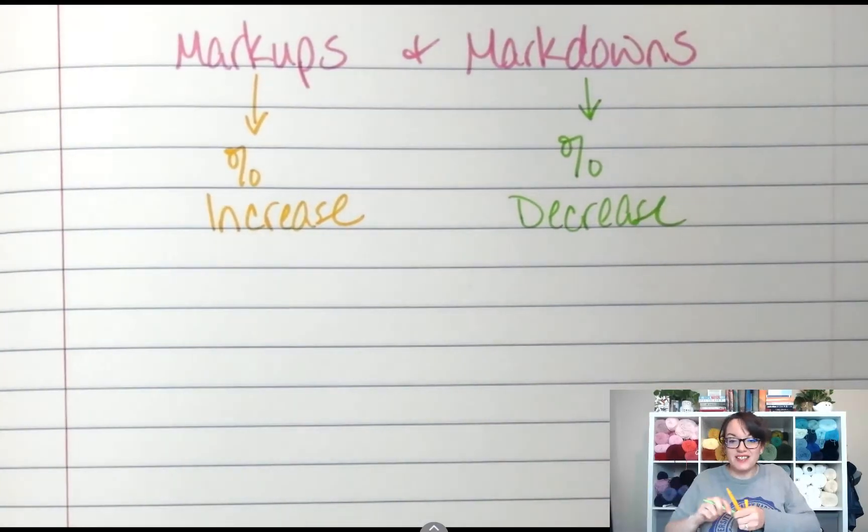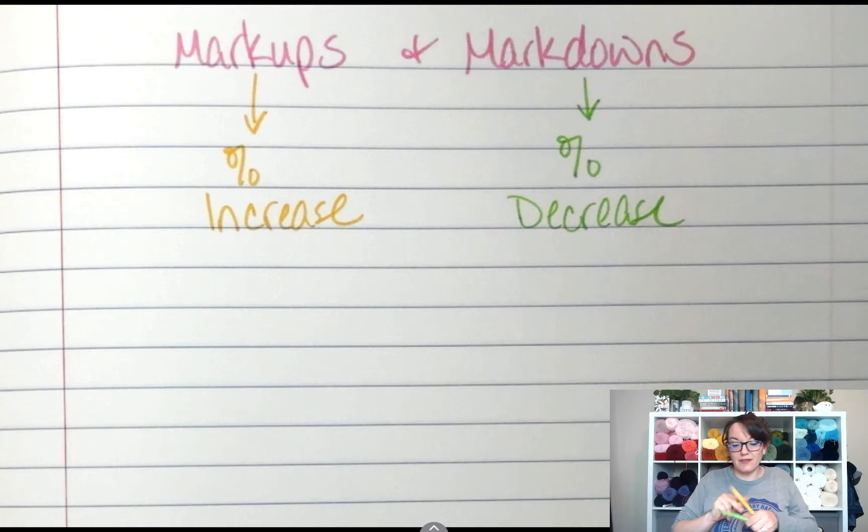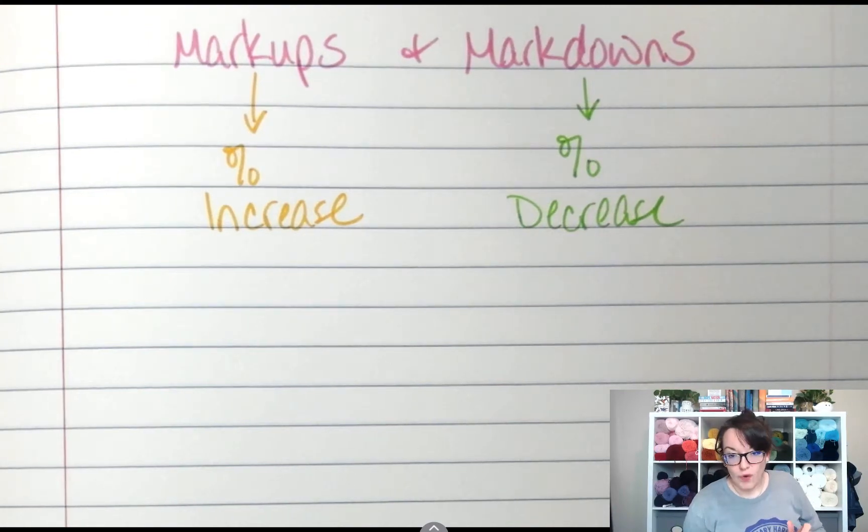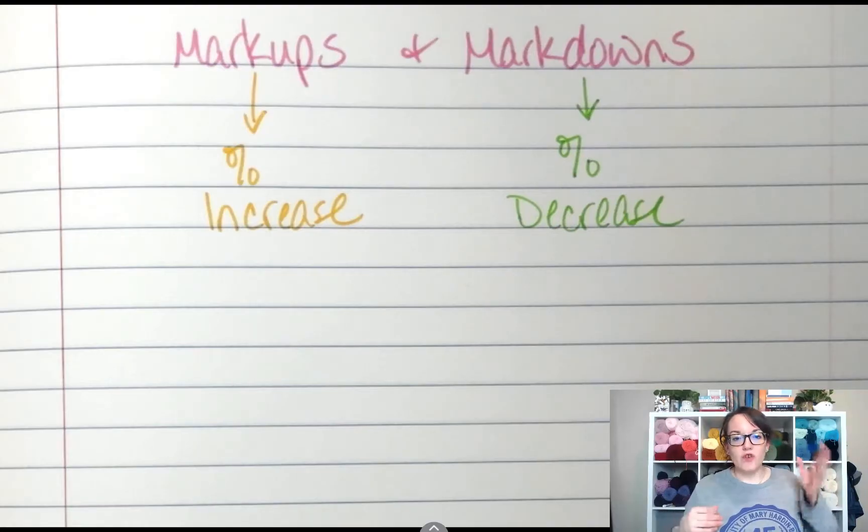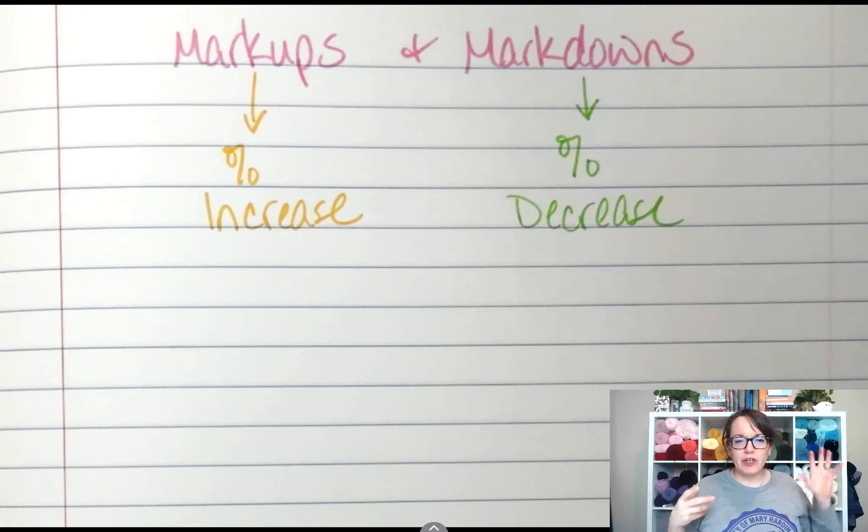The math doesn't change from percent of change. It's just what we're saying and kind of what our goal is. Instead of knowing the new and the old price, we're going to be probably given a percent and asked to find the new price.